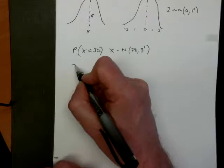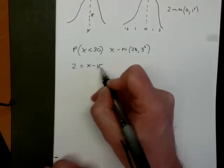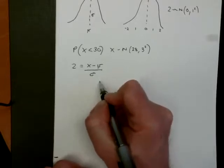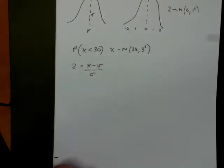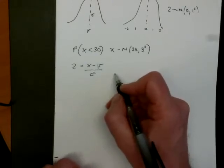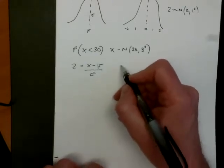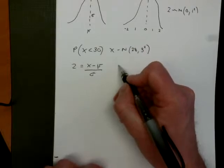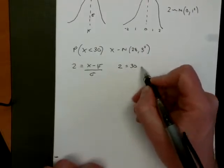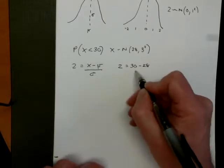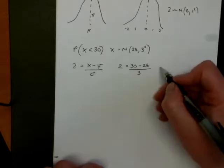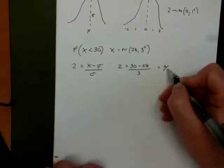If we remember that our z transformation can be found by taking our score, finding the difference between our score and the mean, and dividing it by the standard deviation — this is the conversion from x to z. So we want to know the z value that goes with 30. The z will equal 30 subtract the mean of 28, divided by the standard deviation of 3. So we're looking at a z value of two thirds.